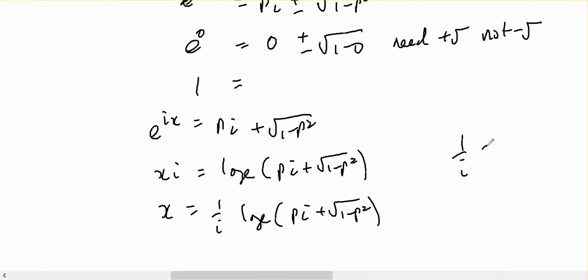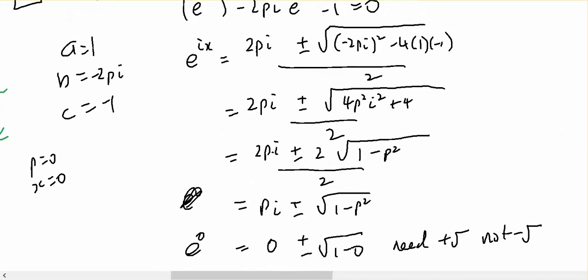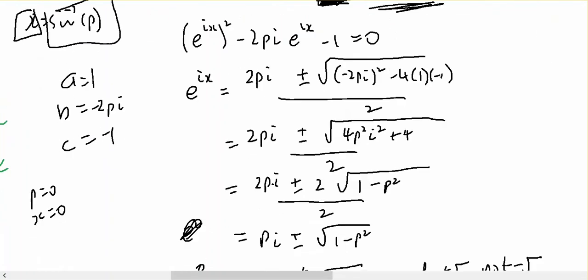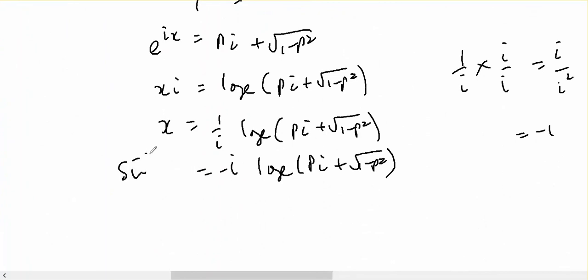Now 1 over i times i over i gives i over i squared, which is negative i. So x equals negative i log base e of pi plus the square root of 1 minus p squared. And x is the same as the inverse sine of p, which is what I had to show. So that's done.